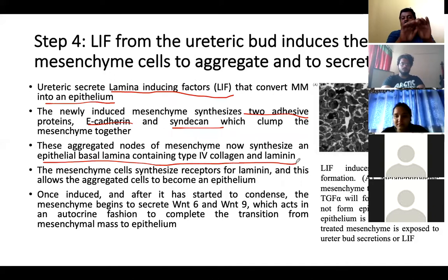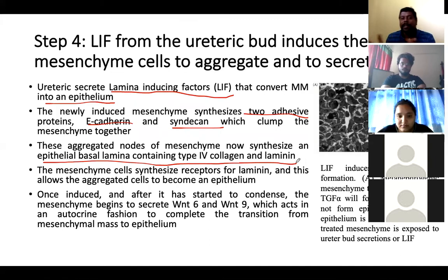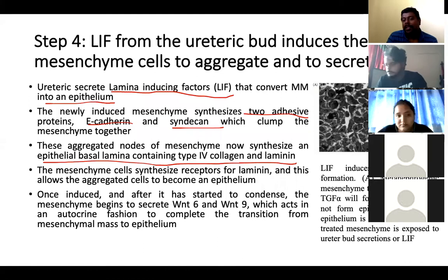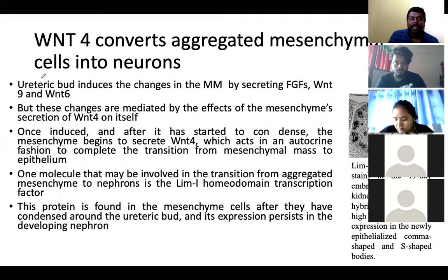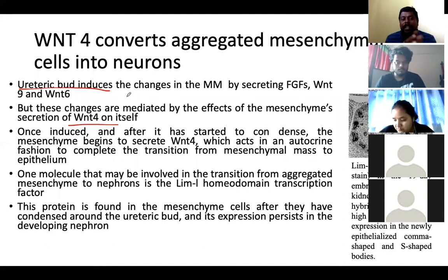E-cadherin and syndecan make the mesenchymal factors aggregate. The other two proteins — type IV collagen and laminin — form the epithelial basal lamina. Together, proteins from the ureteric bud influence the mesenchymal cells to become a condensed structure. You can see that loose structures develop into aggregated structures, and a tubular or cuboidal structure is formed from the mass of tissues.